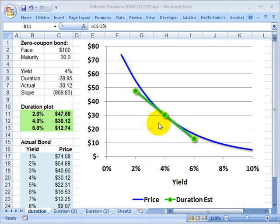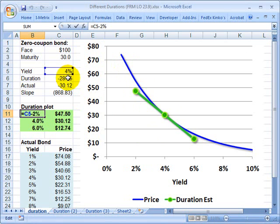So if we look at this line at 4%, the duration is actually negative 28.85. What does that mean? Well, it means that for a 1% change in yield, let's say the yield goes down by 1% from 4% to 3%.